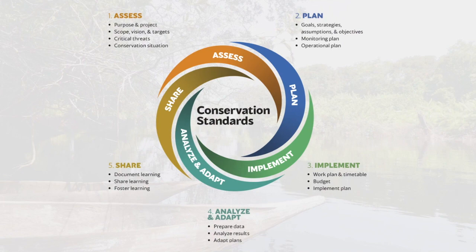The Conservation Standards provide a process to help us answer these questions. They're organized into a five-step project management cycle that guides conservation teams and practitioners to design, implement, monitor, and evaluate conservation projects. The Conservation Standards also enable teams to learn from their monitoring results and adapt to changes swiftly and flexibly.